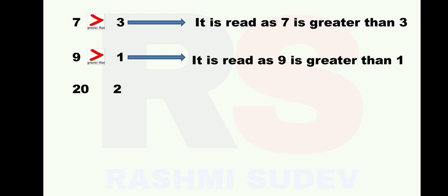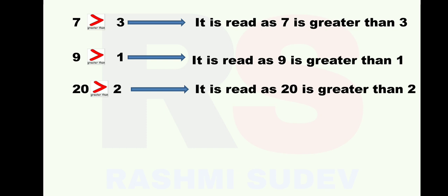Given numbers are 20 and 2. 20 is the greater number and 2 is the smaller number. So which sign are you going to put here? Greater than sign. How are you going to read this? See the sign and read the sentence: 20 is greater than 2.